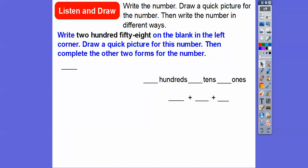All right, so this one says write 258 in the blank left corner, draw a quick picture for this number, then complete the other two forms of the number. So 258.